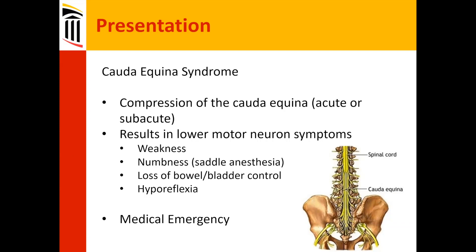Cauda equina syndrome is classically taught as one of the few neurosurgical emergencies. Studies have shown that if you don't address it within 24 — and certainly by 48 hours — deficits can become permanent. It's usually caused by an acute broad disc herniation that compresses many nerve roots in the cauda equina, resulting in weakness, numbness, saddle anesthesia, and loss of bowel or bladder control, with hyporeflexia.